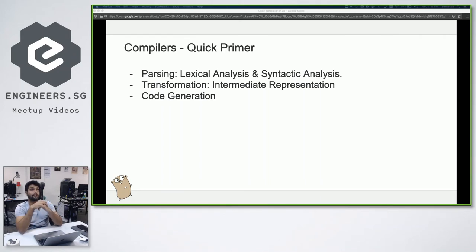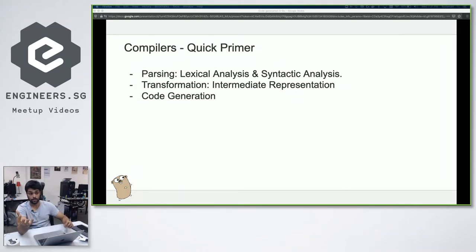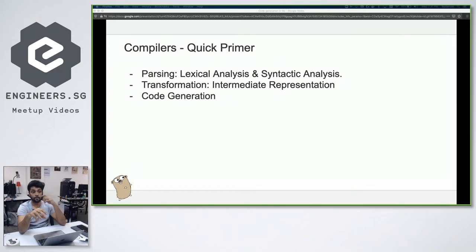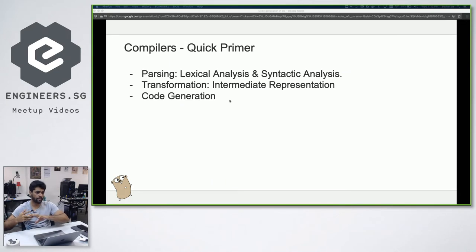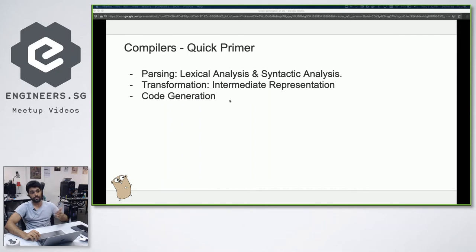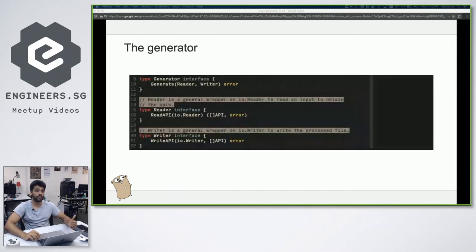Then there's transformation. The reason it exists is so that compilers can swap in frontends and backends. Modern compilers like LLVM can swap out a Clang backend for a GCC backend, and intermediate representation allows you to do this. We took advantage of this style as well — that's the reason I'm running you through it. Finally, code generation uses this representation to arrive at your desired output. There's an input phase, a process phase, and an output phase — that's essentially how we designed our generator.